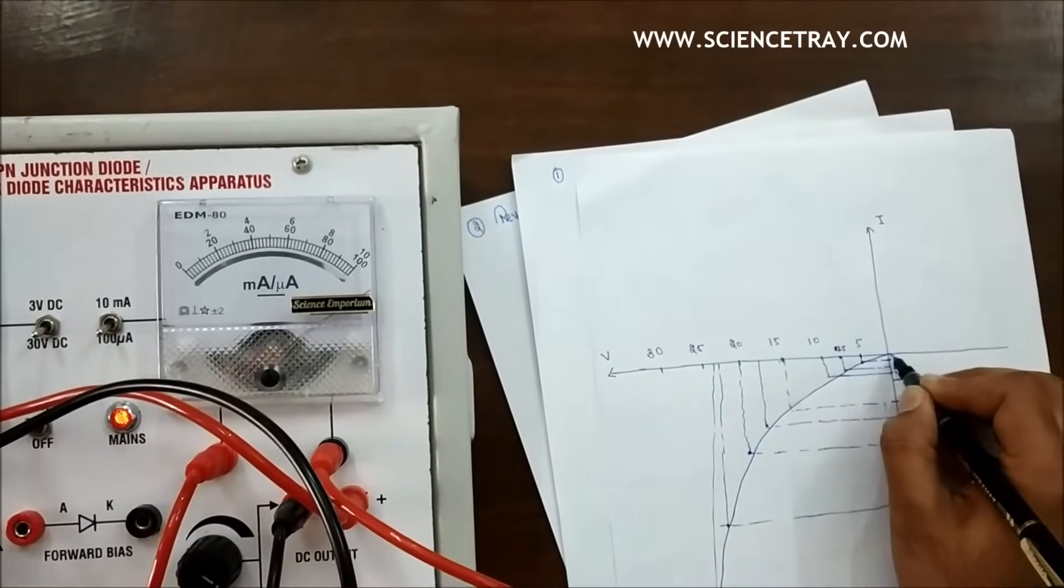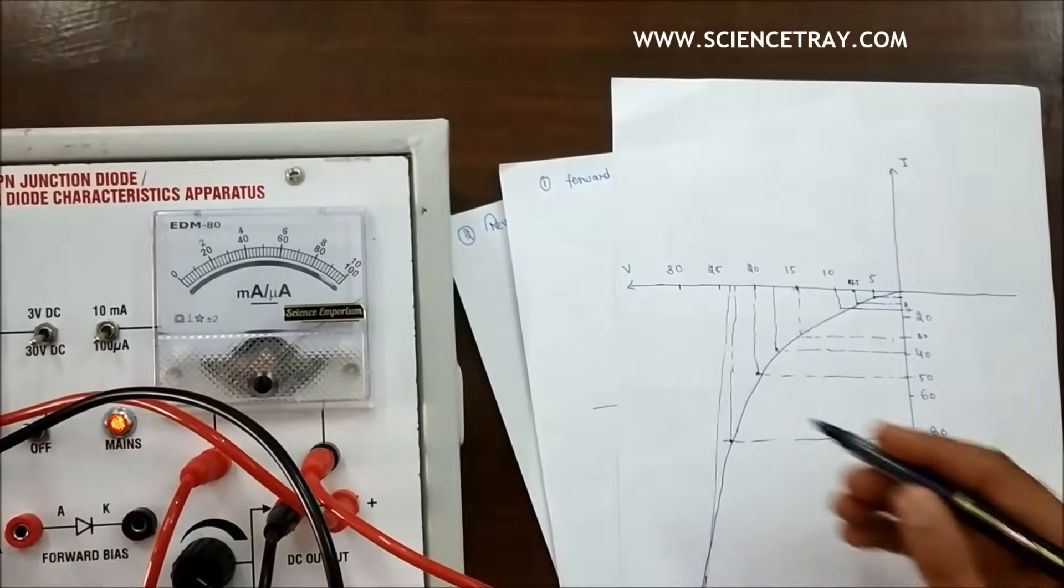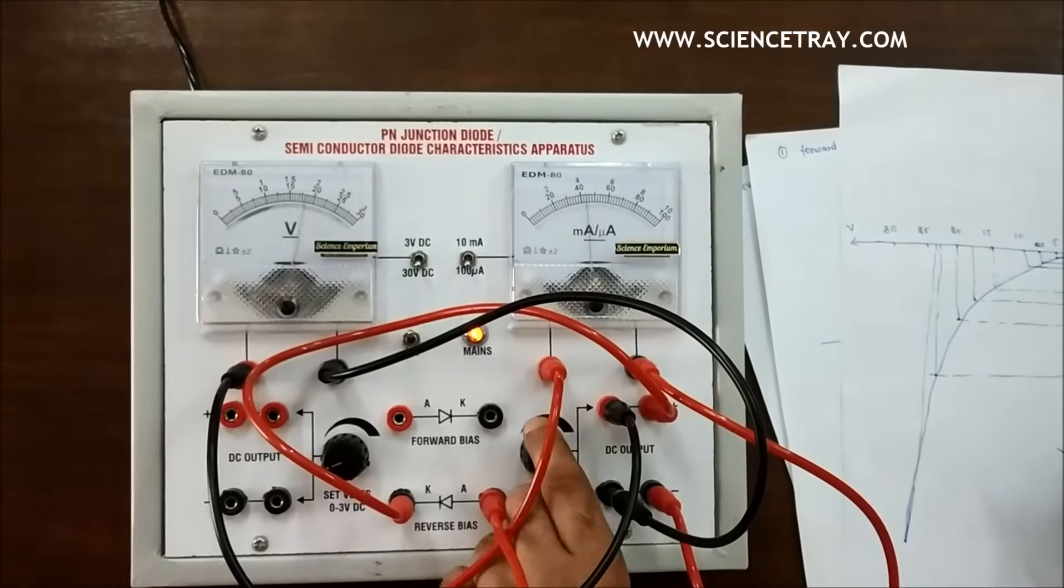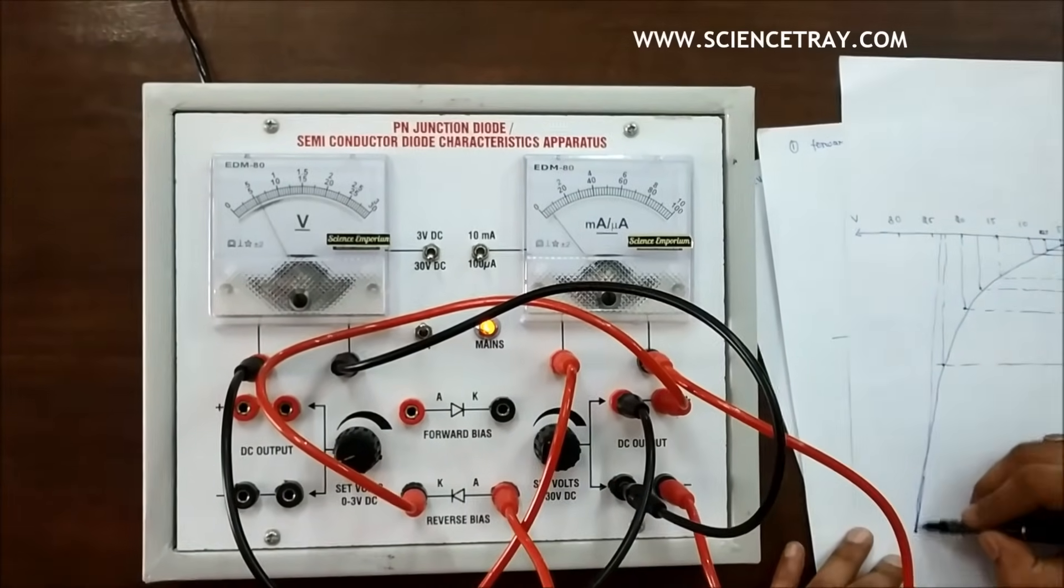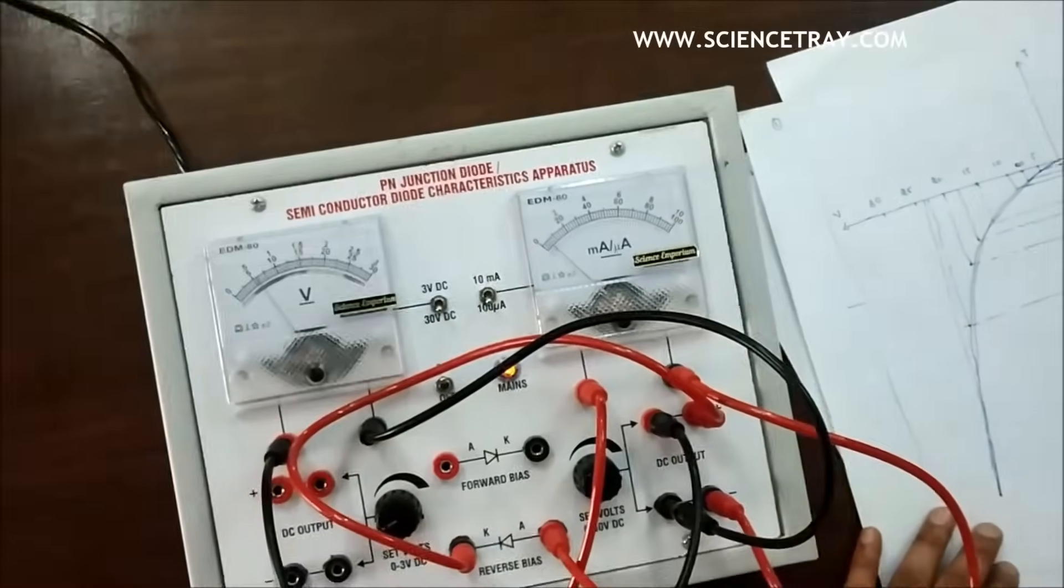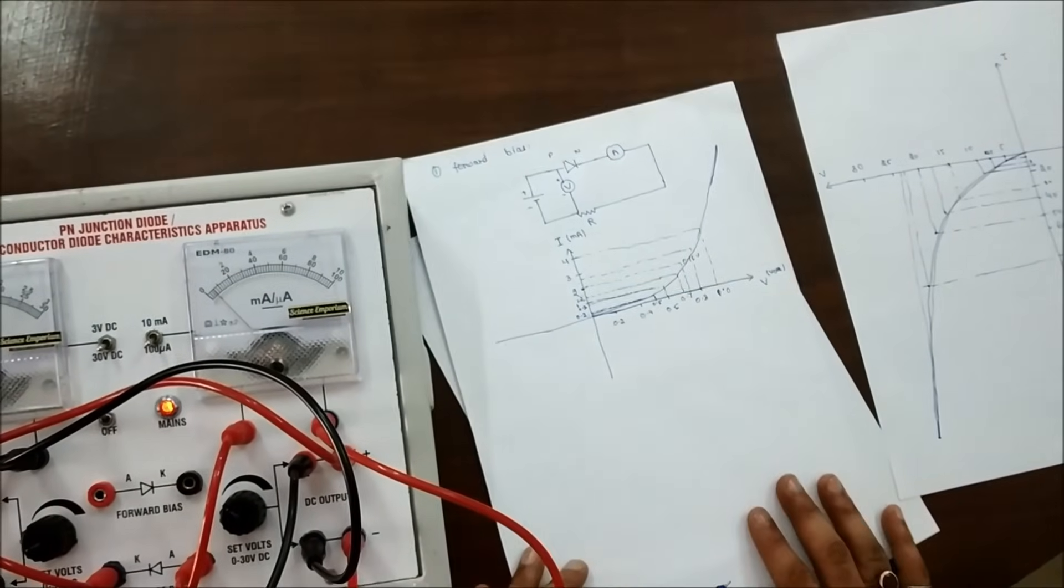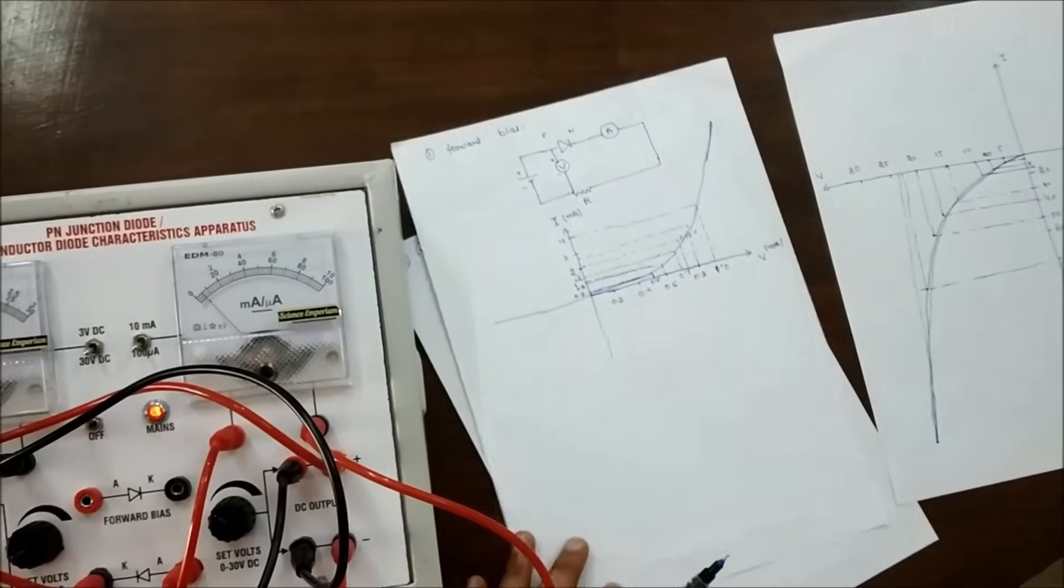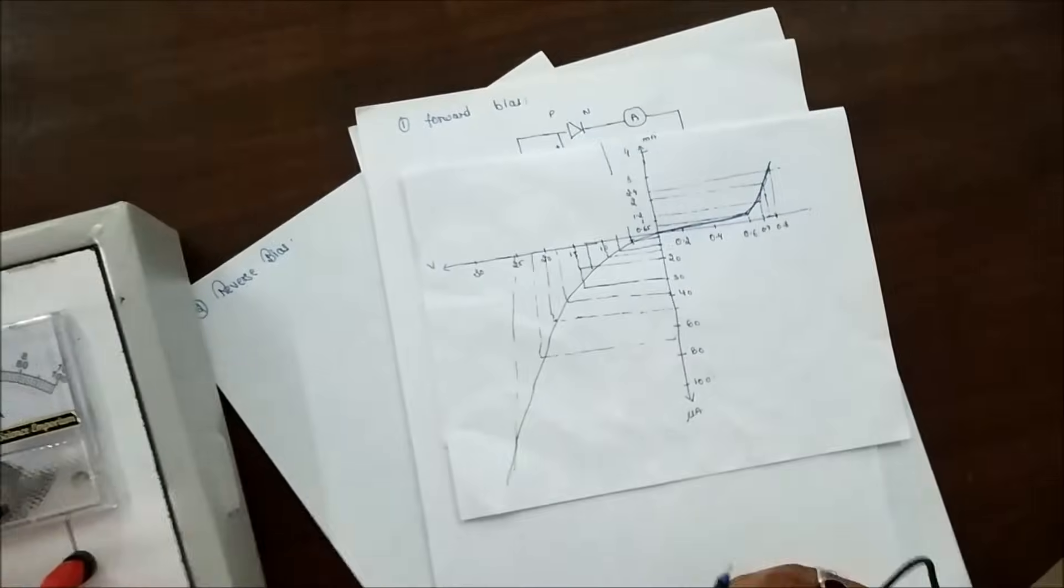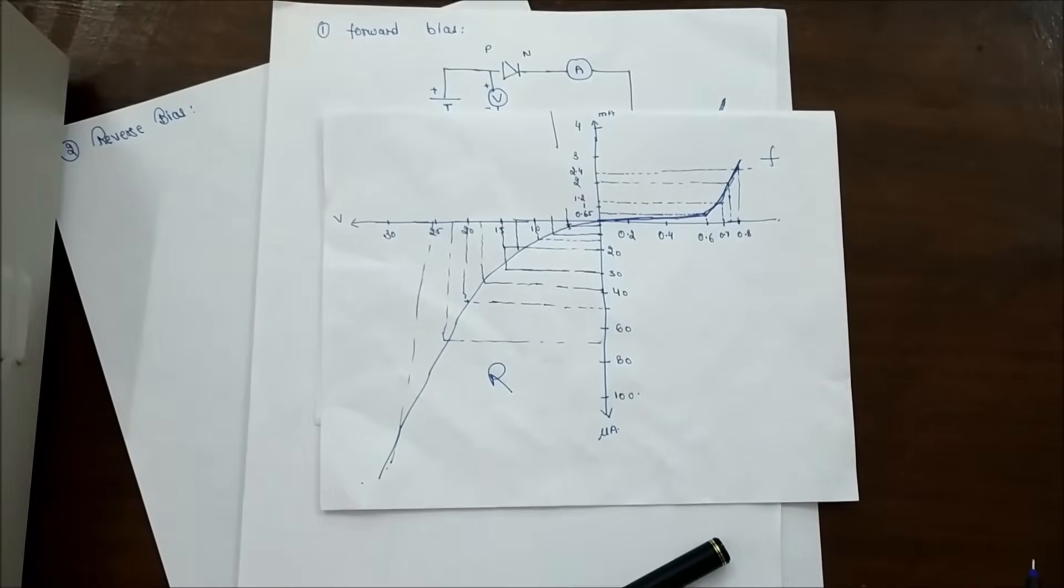This is our reverse biased graph. And when we take it with our forward biased graph and combine them, it looks like this - forward biased and reverse biased. It is a combined graph showing the complete characteristics of the PN junction diode.